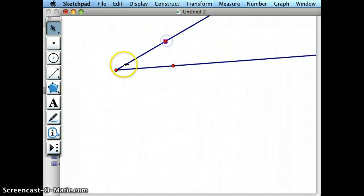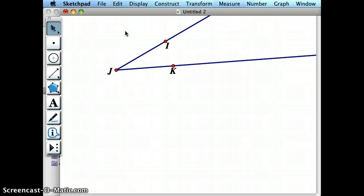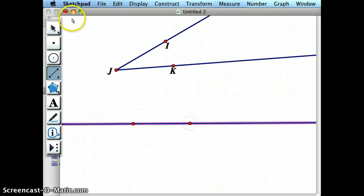Let's go ahead and quickly choose the three points that are on the angle. And so let's say I go ahead and draw a line here and I basically want to make a copy of angle IJK on this line.